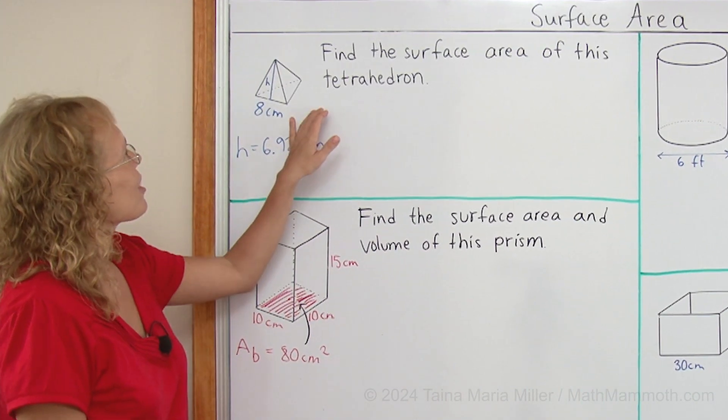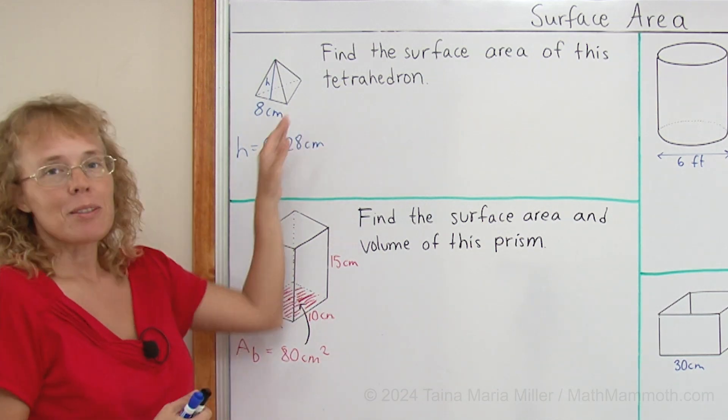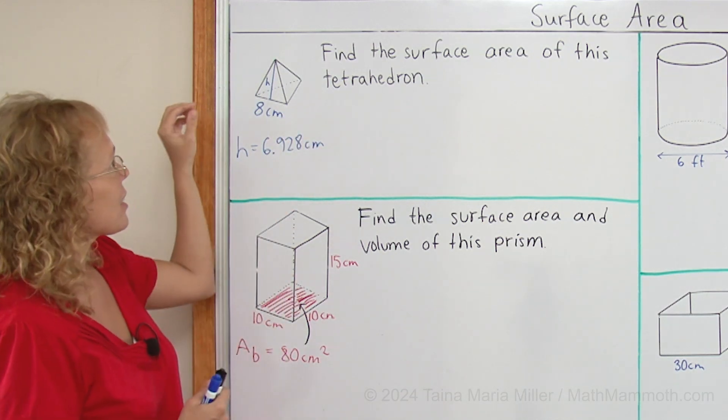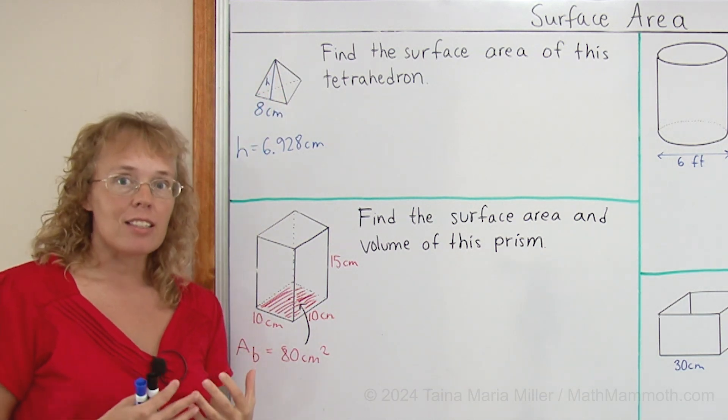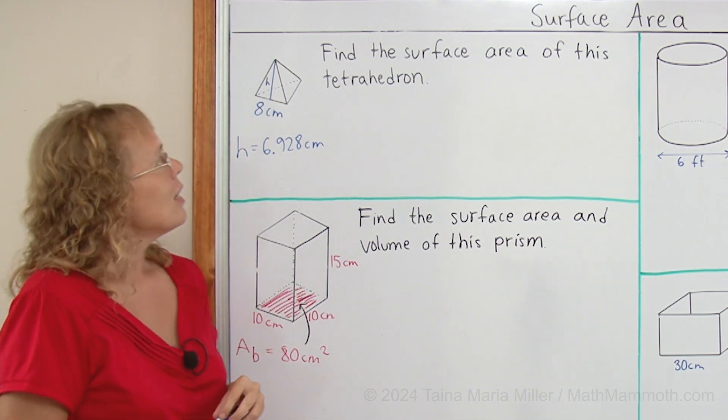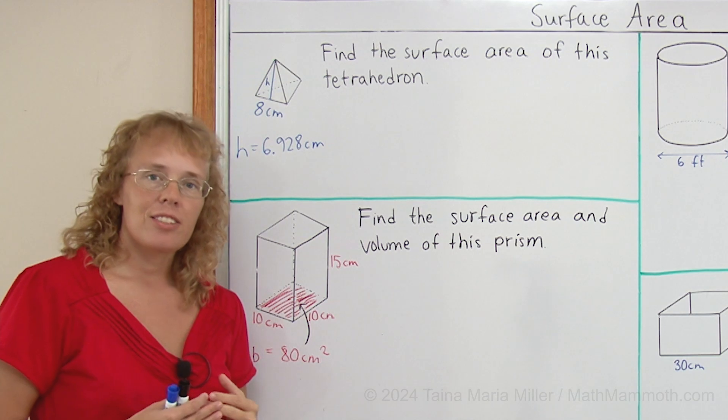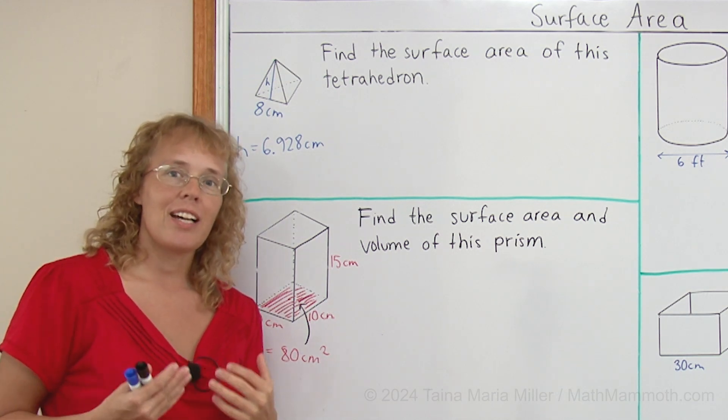My first figure here is a tetrahedron. It means it's like a pyramid and it has triangles here as faces. In fact, it has four identical triangles there. Each triangle is an equilateral triangle. And we need to find the surface area of this tetrahedron. It means we need to add the areas of those four triangles.